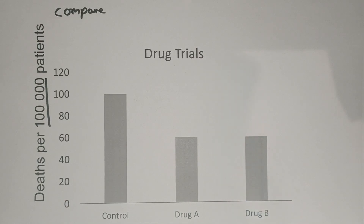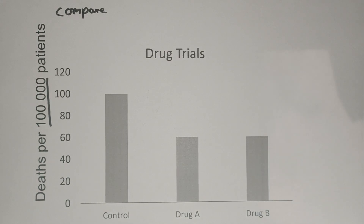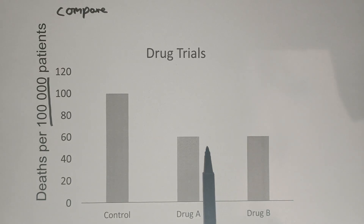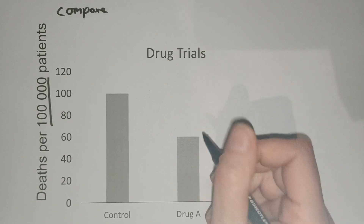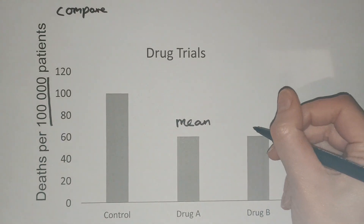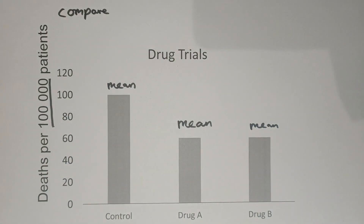These three bars are the mean number. So for our control — and in this case that basically means they didn't give them any treatment at all — we're looking at around 100 patients per 100,000 dying. So without any treatment at all, that's the number of patients that we would expect to die. For drug A and for drug B, we're looking at a significant decrease. So both of these drugs look as though that treatment is helping survival. In terms of which one is better, this information doesn't give us everything that we require. This is simply the mean number of people that died per 100,000 that were on that drug. It doesn't give us enough information to be able to evaluate the data.